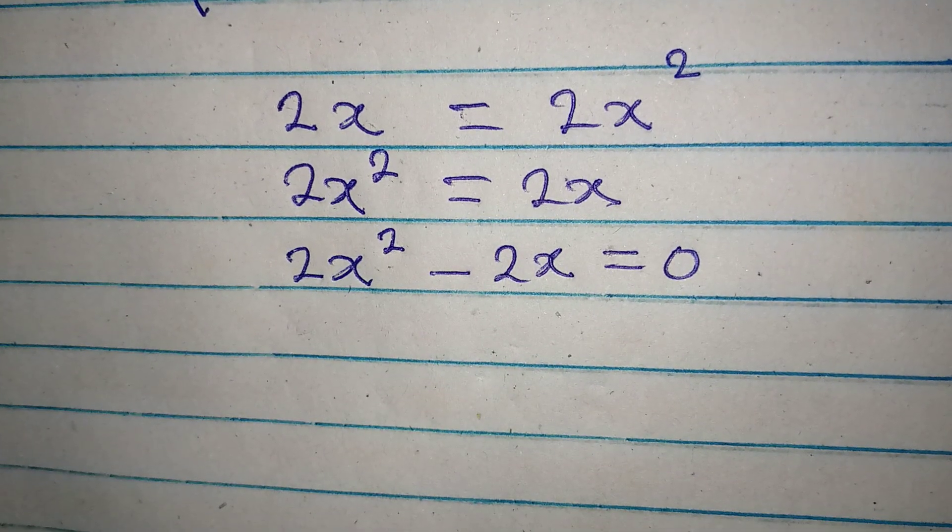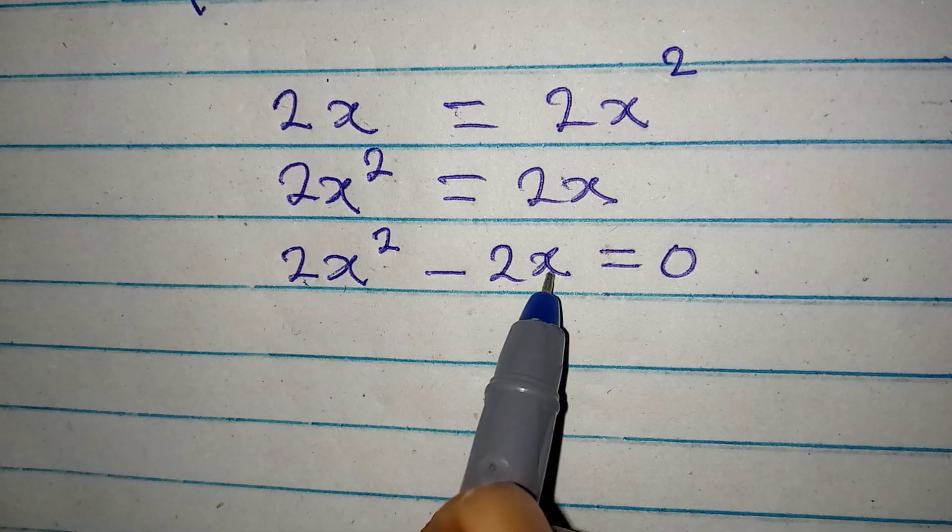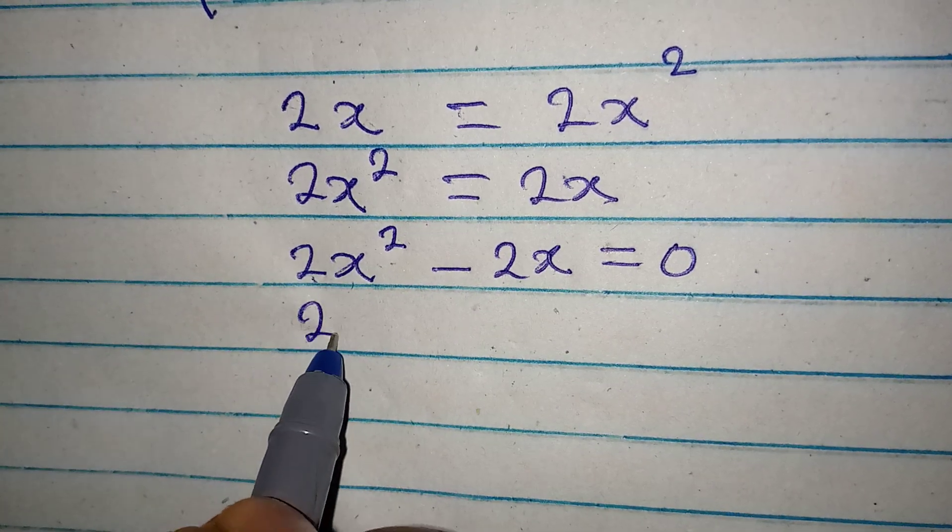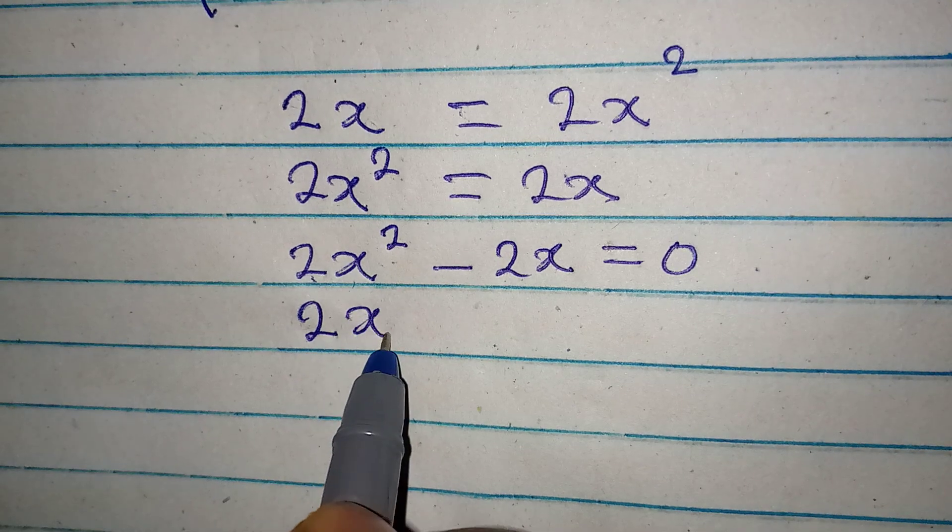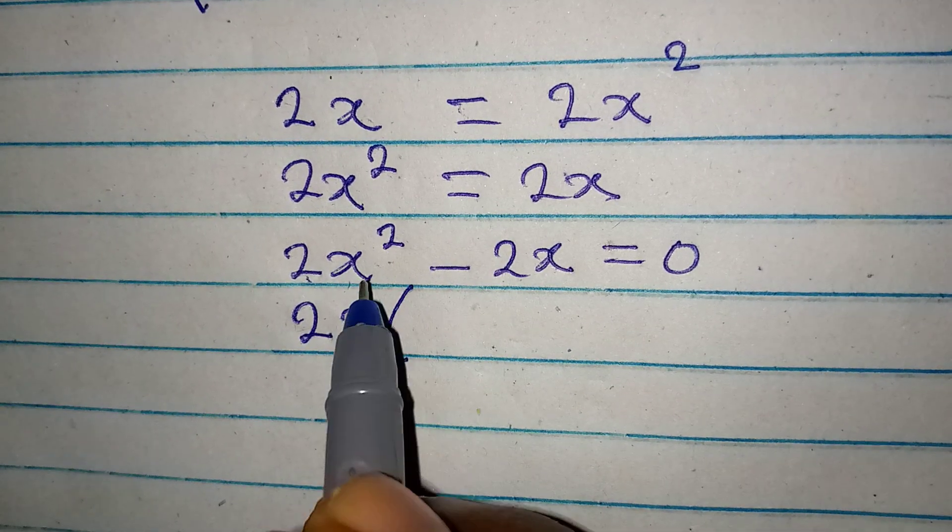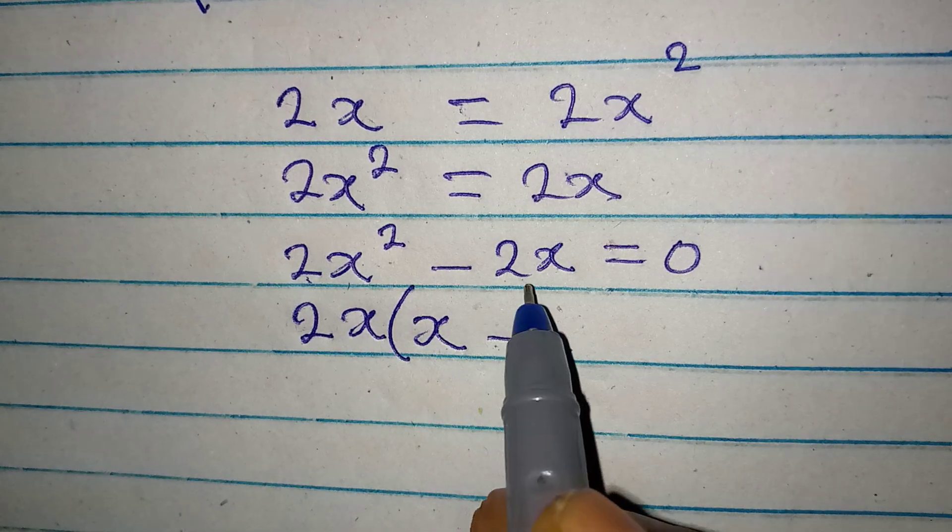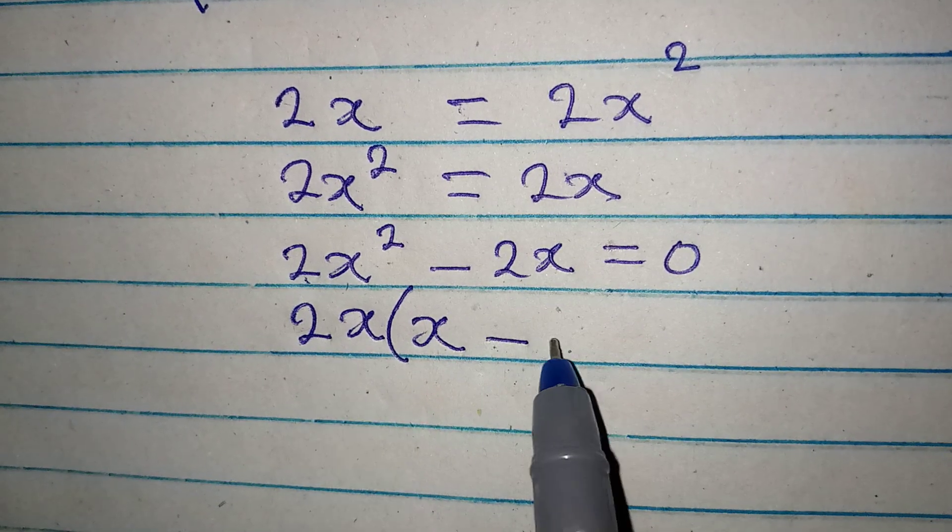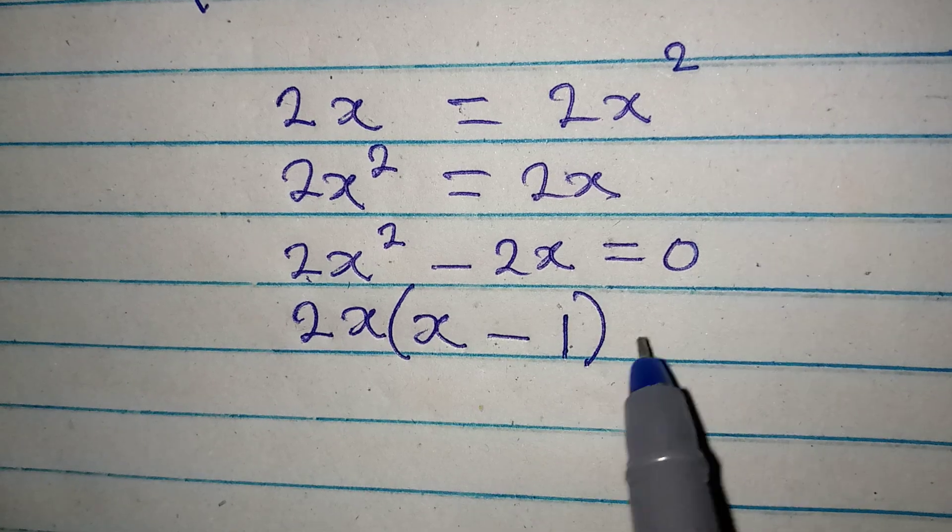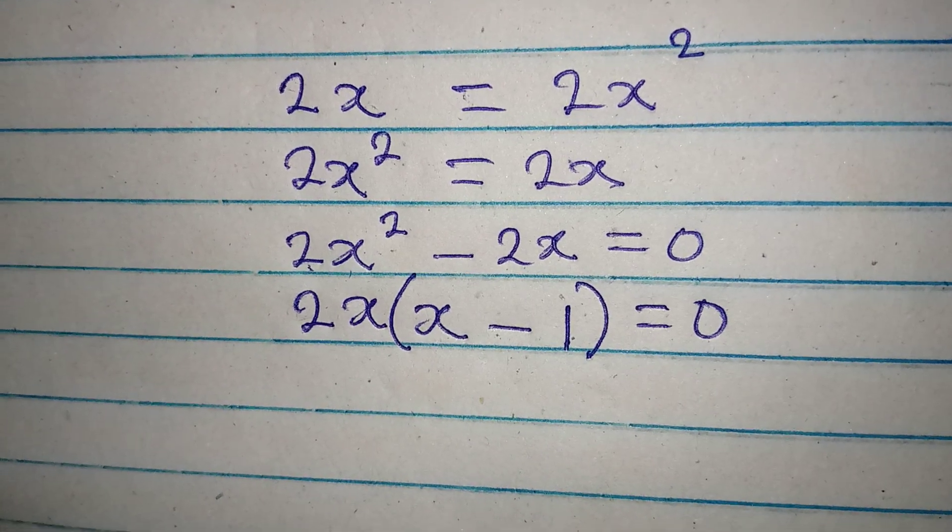The next thing is to factor out 2 and x. So 2 is a common factor, x is also a common factor, and in here there will be x minus 1. 2x divided by 2x is 1, close this and have 0.